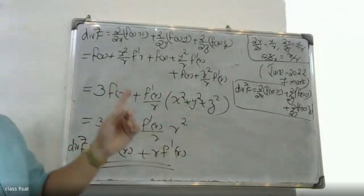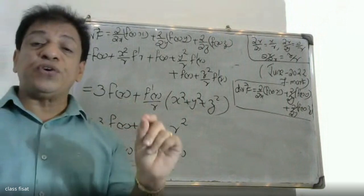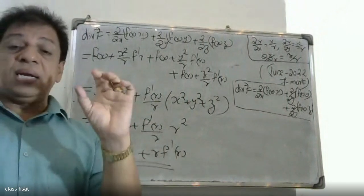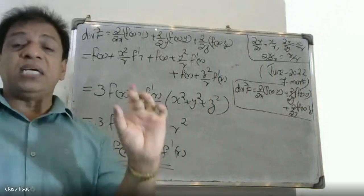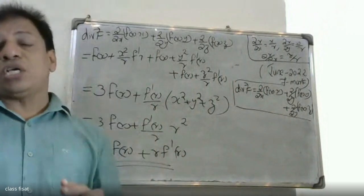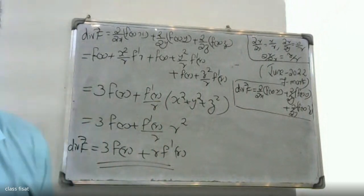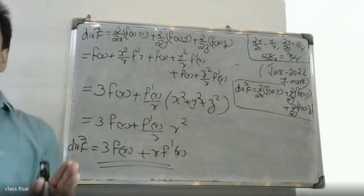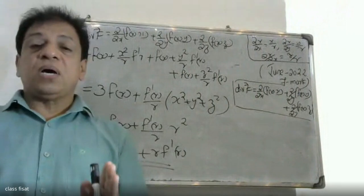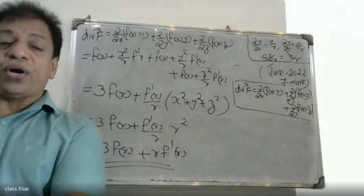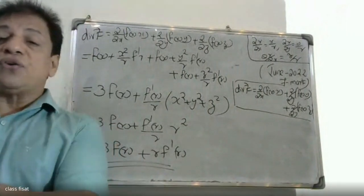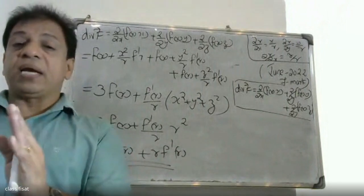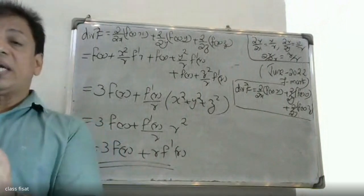This confirms that del dot f of f(r) times vector r equals 3f(r) plus r·f'(r). Using the del operator: del dot f with i ∂/∂x, j ∂/∂y, k ∂/∂z, and noting that i·i, j·j, k·k each equal 1, while cross terms i·j and j·k equal zero.